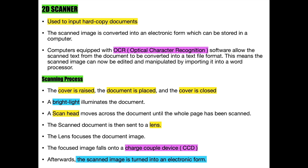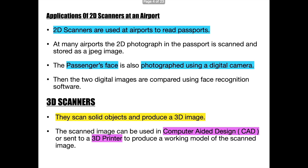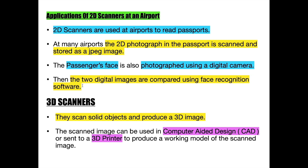Now let's talk about the applications of 2D scanners at an airport. 2D scanners are used to scan passports at an airport. The passport is scanned and stored as a JPEG image for use in face recognition software. The passenger's face is photographed with a digital camera, and then the photographed image and the JPEG image are compared during the identification process.